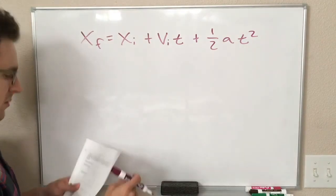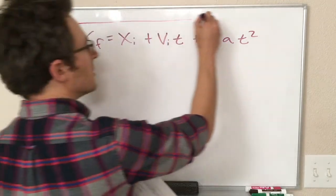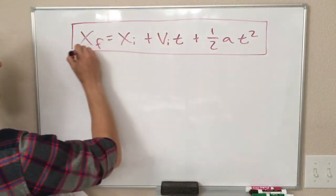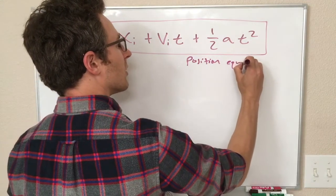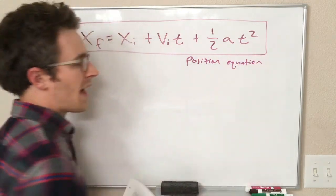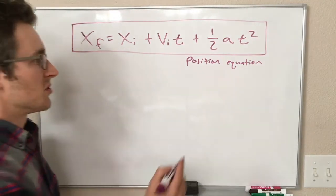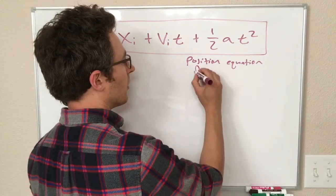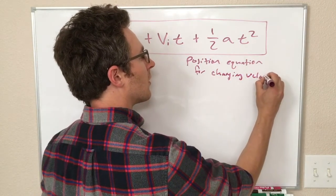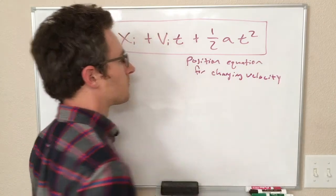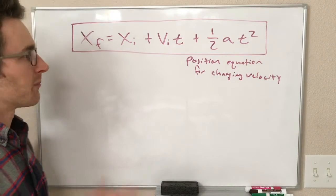Okay, so this is our equation. This is the position equation. And we have another equation for position that only worked for constant velocity. This is the position equation for a changing velocity because this acceleration means that our velocity is changing.